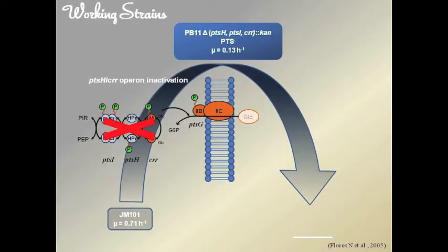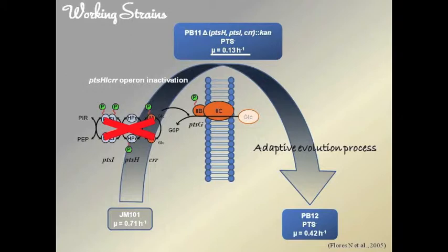However, due to the elimination of the PTS system, glucose transport and growth rates in the PB11 strain decreased significantly on glucose. To overcome this limitation, an adaptive evolution process on PB11 was performed and the PB12 strain was obtained, which partially recovered its growth rate on glucose compared with its parental strain.